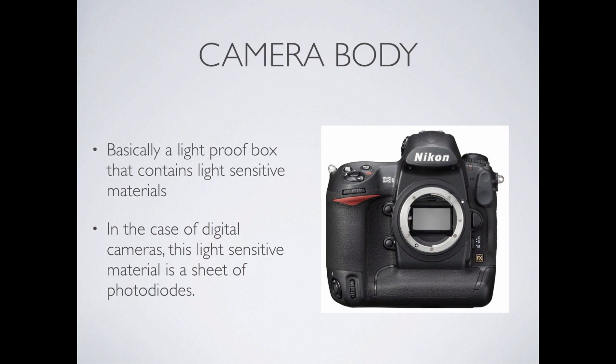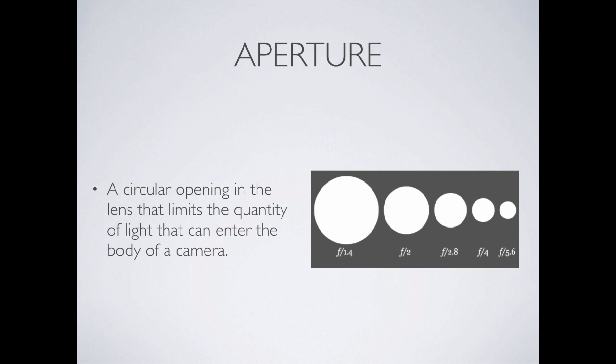The light-sensitive material inside this box for digital cameras is an actual sensor. In the old days it was a piece of film — my guess is that many of you have never even seen a piece of film. Aperture is a key term we'll talk about a lot in this class because it affects a photo in a pretty dramatic and artistic way. Basically, aperture is the size of the opening that lets light through and ultimately hit the light-sensitive material — the sensor in the camera.